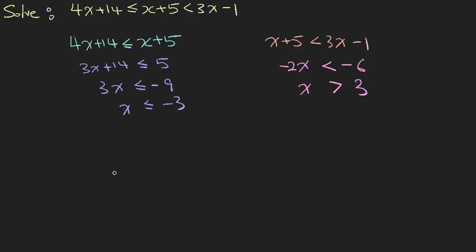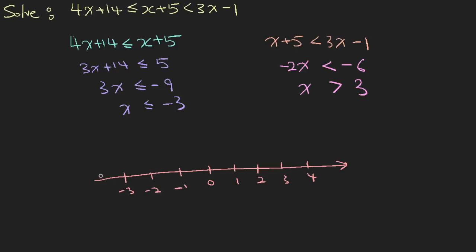So let us draw the number line to see how this looks. We mark points including 0, 1, 2, 3, 4, minus 1, minus 2, minus 3, and minus 4. The first condition says x can take on any value less than or equals to negative 3, so we draw a filled dot at negative 3 to show it's inclusive, with an arrow pointing left. For the right-hand side, x is greater than 3 but not inclusive of 3, so we draw an open circle at 3 with an arrow pointing right.